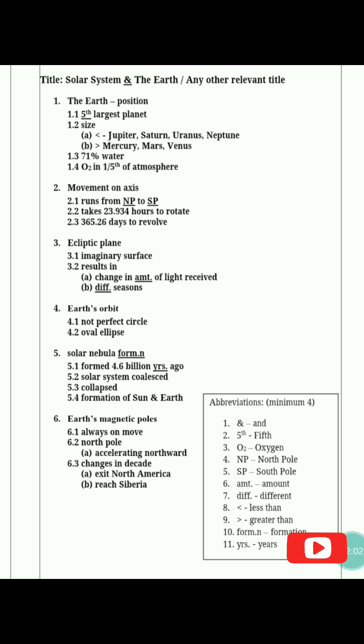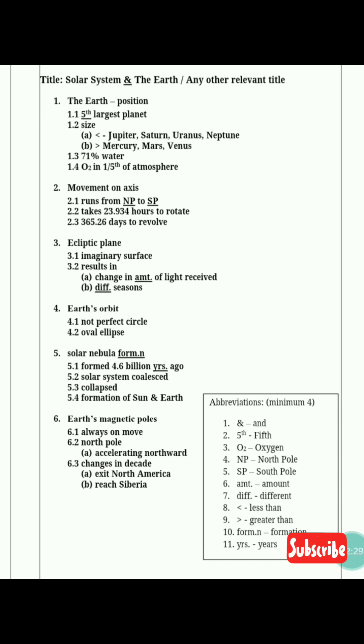The second heading comes from the second paragraph, where we discuss movement. So heading 2 is 'Movement on Axis.' Sub-heading 2.1: runs from North Pole to South Pole — we abbreviated this as NP to SP and underlined it because we are making abbreviations. Sub-heading 2.2: takes 23.934 hours to rotate, and 365.26 days to revolve.